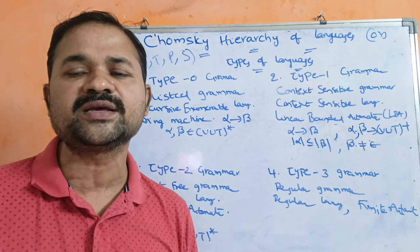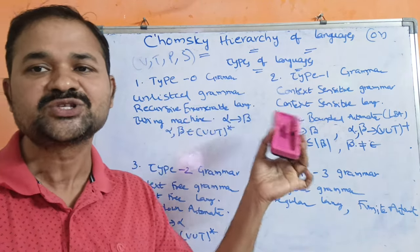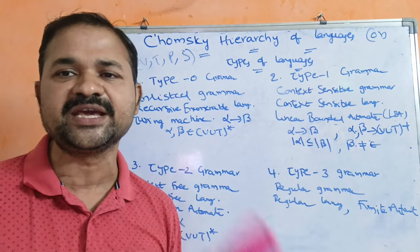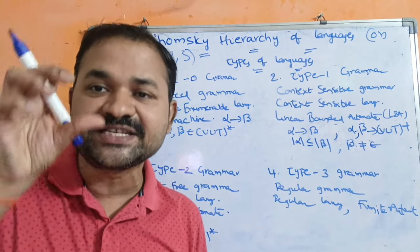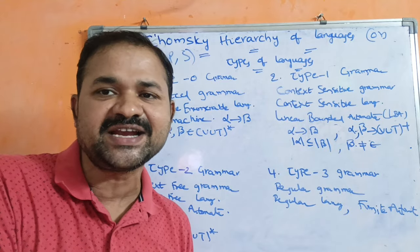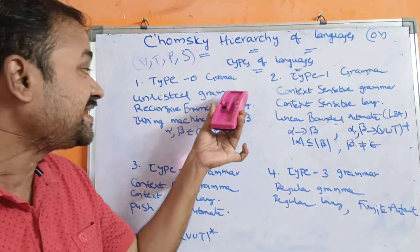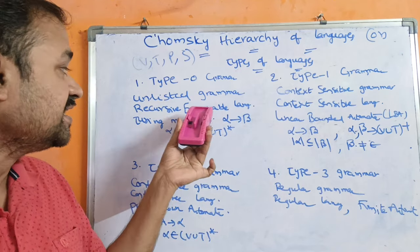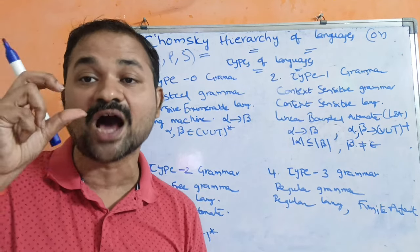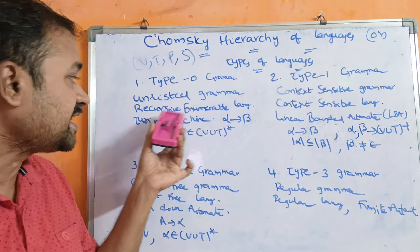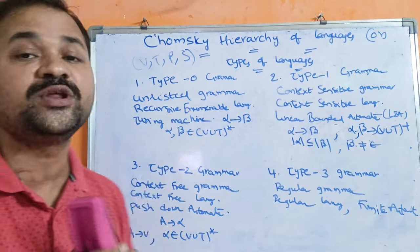Type 0 grammar is also called as unrestricted grammar. The name itself specifies the meaning — there is no restriction on the grammar, no restriction on the left hand side of the production and right hand side of the production. An unrestricted grammar generates recursive enumerable language, in short REL. Recursive enumerable languages are accepted by Turing machine.